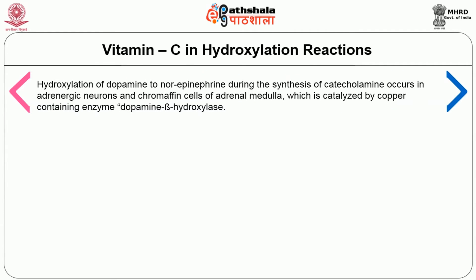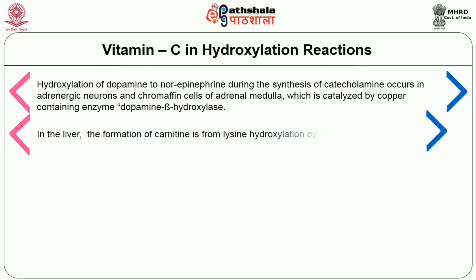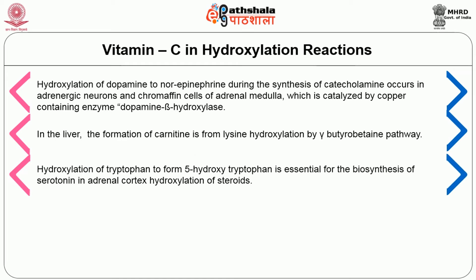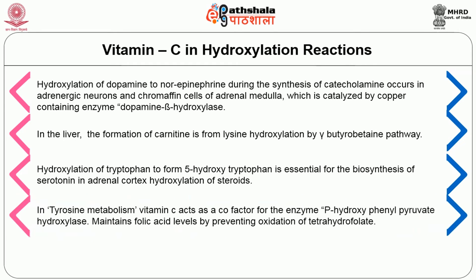Hydroxylation of dopamine to norepinephrine during the synthesis of catecholamine occurs in adrenergic neurons and chromaffin cells of adrenal medulla, catalyzed by the copper-containing enzyme dopamine beta-hydroxylase. In the liver, the formation of carnitine is from lysine hydroxylation. Hydroxylation of tryptophan to form 5-hydroxytryptophan is essential for the biosynthesis of serotonin. In tyrosine metabolism, vitamin C acts as a cofactor for the enzyme p-hydroxyphenylpyruvate hydroxylase. It also maintains folic acid levels by preventing oxidation of tetrahydrofolate.